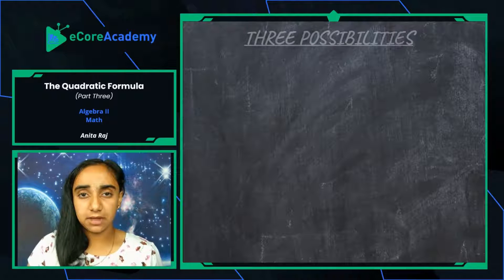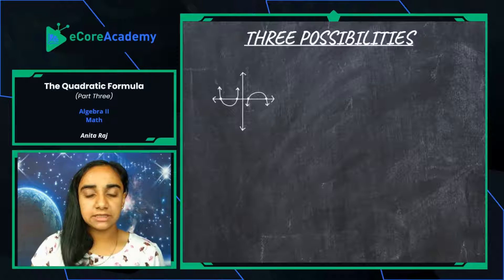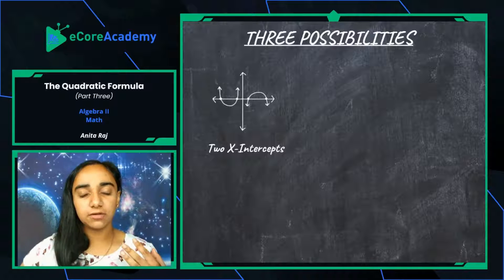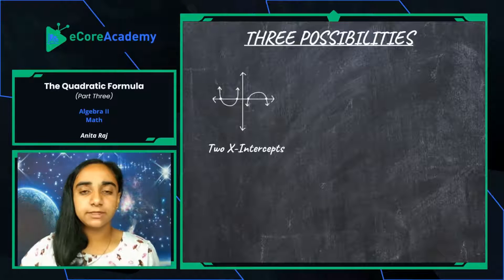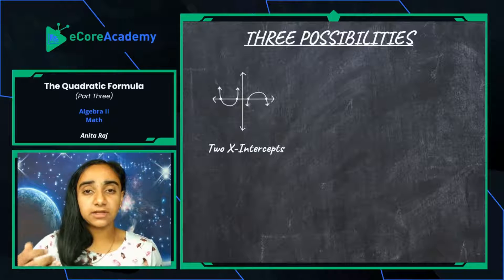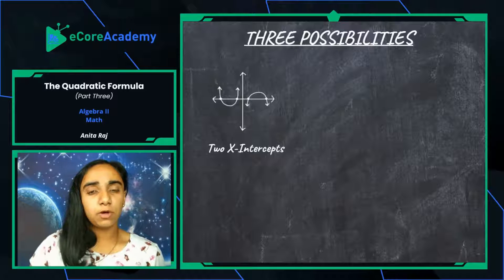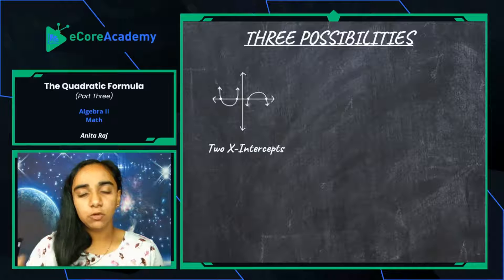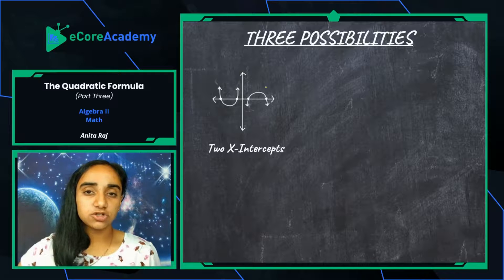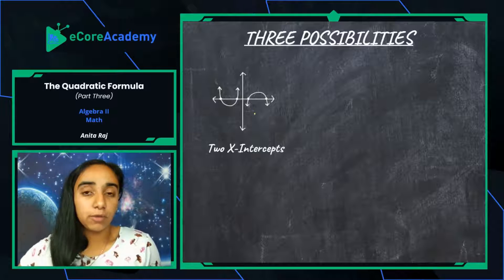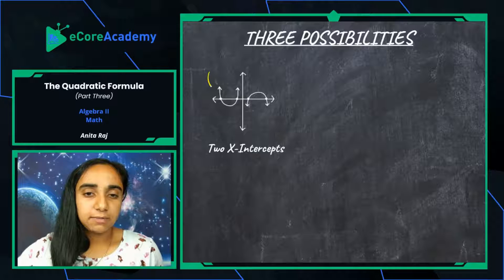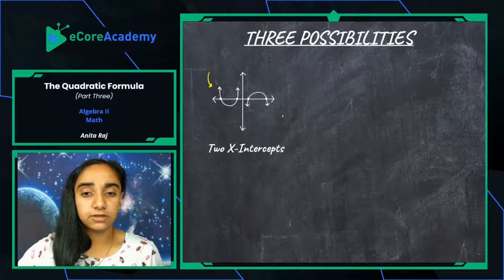Let's look at the three possibilities. The first one is two x-intercepts, which is typically what we've been seeing with our quadratic equations whenever we solve — we typically get two different solutions. That's partially because of that x-squared term that is characteristic of quadratic equations. There is that one instance where we solve a perfect square trinomial and we only got one solution. This graph shows a quadratic equation that, when graphed, has two x-intercepts.